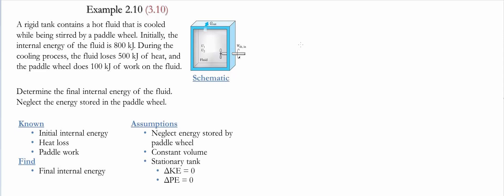To solve this problem we are going to do an energy balance. We say that the energy change in the system is equal to the net energy transfer into the system — that is, the amount of energy going in minus the amount of energy leaving. The change in energy of the system includes changes in kinetic energy, potential energy, and internal energy.